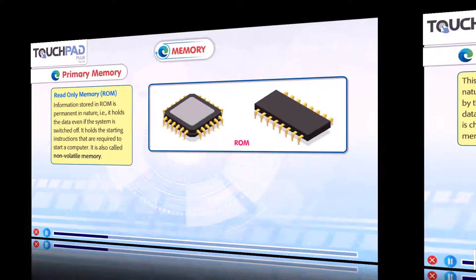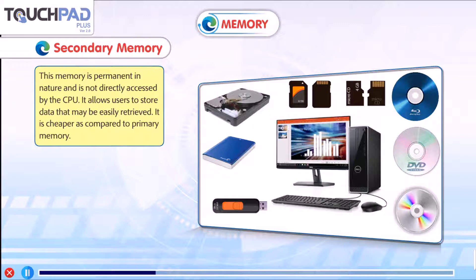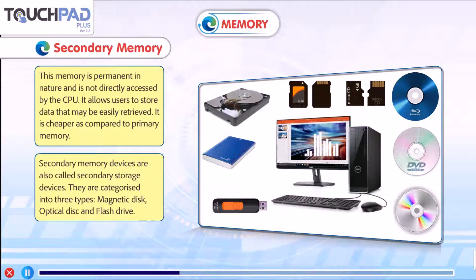Secondary memory. Let's talk about secondary memory. This memory is permanent in nature and is not directly accessed by the CPU. It allows the user to store data that may be easily retrieved. It is cheaper as compared to primary memory. Secondary memory devices are also called secondary storage devices.